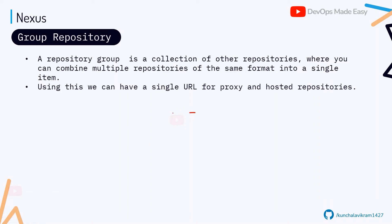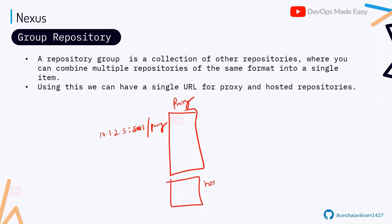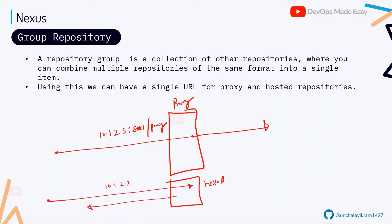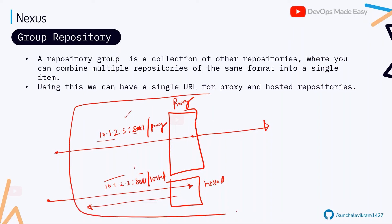For example, say you have a proxy repository at IP 10.1.2.3 port 8081 slash proxy, and a hosted repository at the same server at slash hosted. Instead of giving two different URLs, you include both in a group repository called, say, maven-group. The group URL would be 10.1.2.3 colon 8081 slash group.